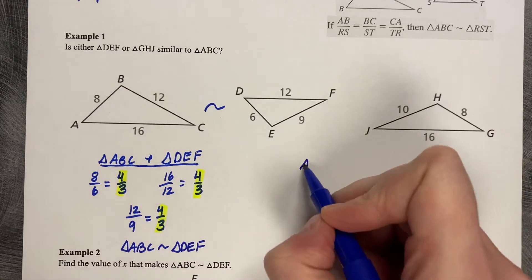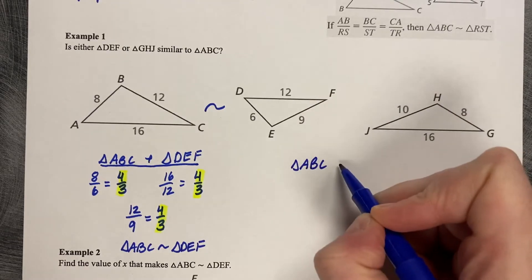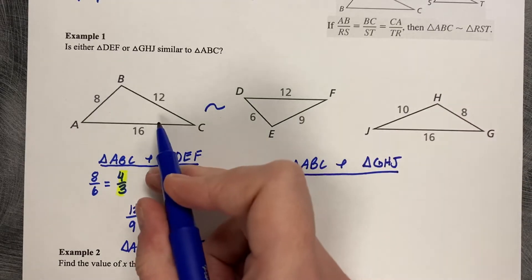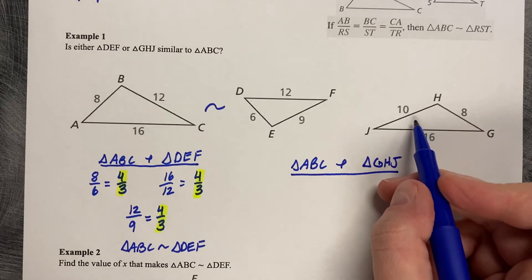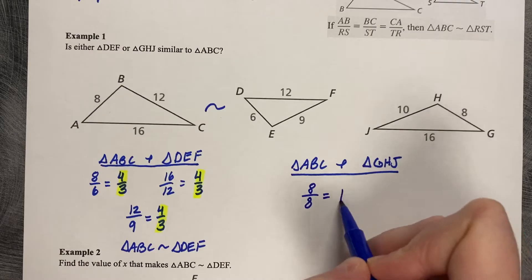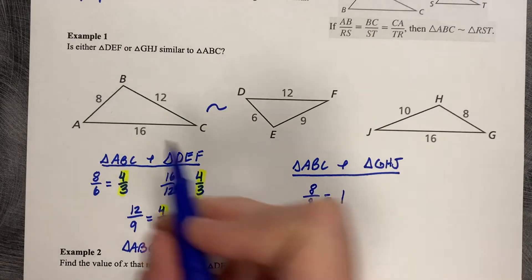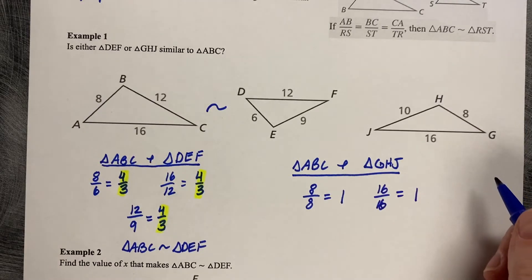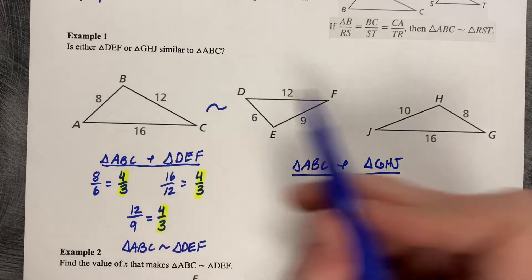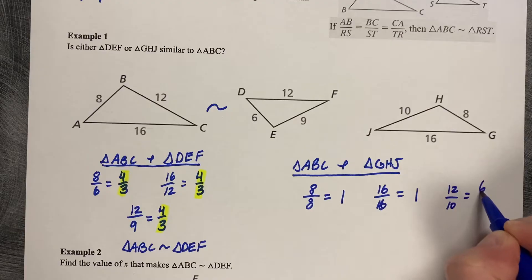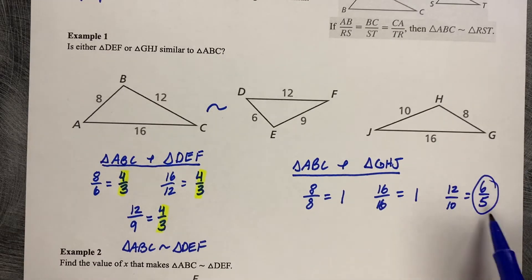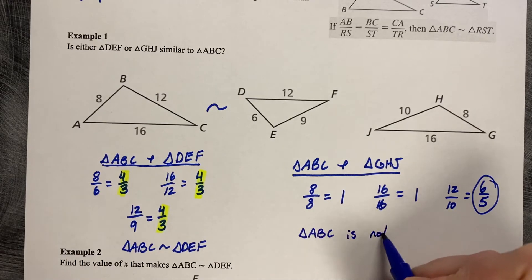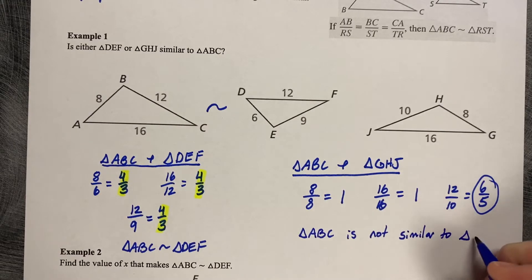All right, let's try ABC and GHJ. So we're comparing this first triangle to this third triangle. So let's do 8 compared to 8 is 1. Let's do 16 compared to 16, which is another 1. But we can see that the last one, 12 compared to 10, is 6 fifths. So because this ratio is not 1, then triangle ABC is not similar to triangle GHJ.